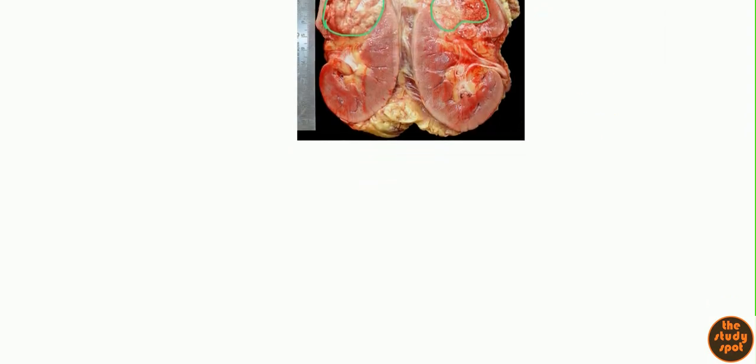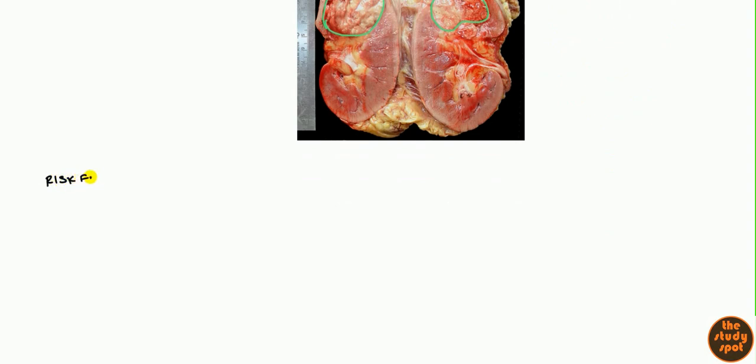So what we'll talk about now is risk factors. The main risk factor is smoking. Smoking increases the risk by 12 times and one third of cases of renal cell carcinoma have been associated with smoking. So smoking is a big risk factor, which also goes for bladder cancer and other types of cancers related to the kidney.